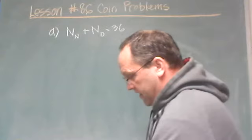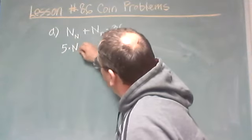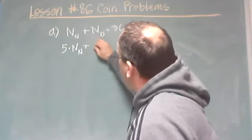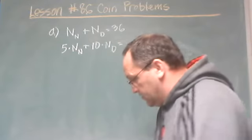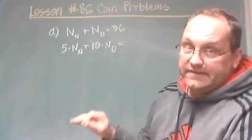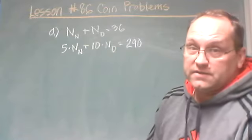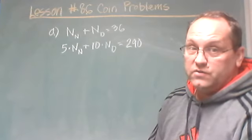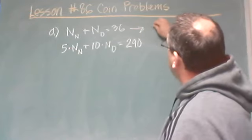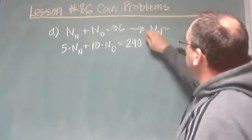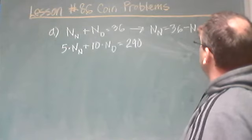It says the value is $2.90. Let's use cents in this equation. So: 5 cents per nickel times the number of nickels, plus 10 cents per dime times the number of dimes, equals 290 cents. Those are our two equations. Now we want to substitute. Let's rearrange: the number of nickels equals 36 minus the number of dimes.